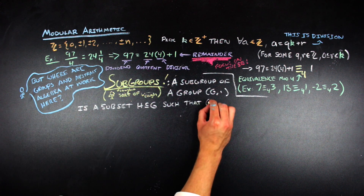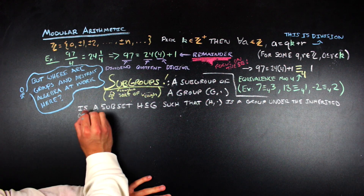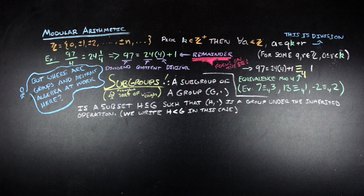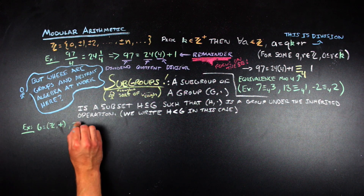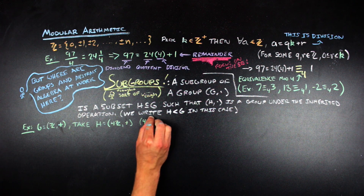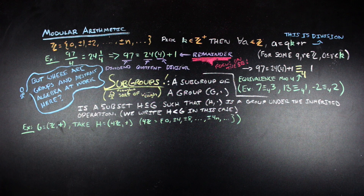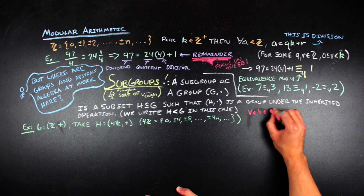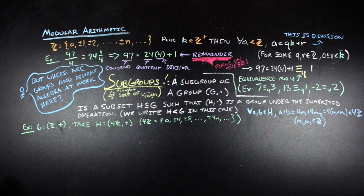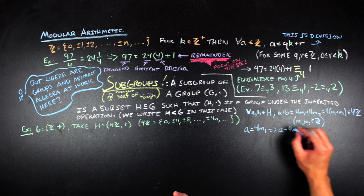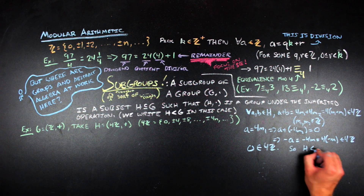A subgroup is a subset of a group that is itself a group under the same binary operation. The notation does hurt my soul a little bit, but we can look at an example. If we take the group of integers under addition, we can take a simple subgroup H = 4ℤ, which in set form is {0, ±4, ±8, …, ±4n, …}. I've written a bare-bones argument for why H is a subgroup. The important thing is to compare equivalence modulo 4 to the group 4ℤ.